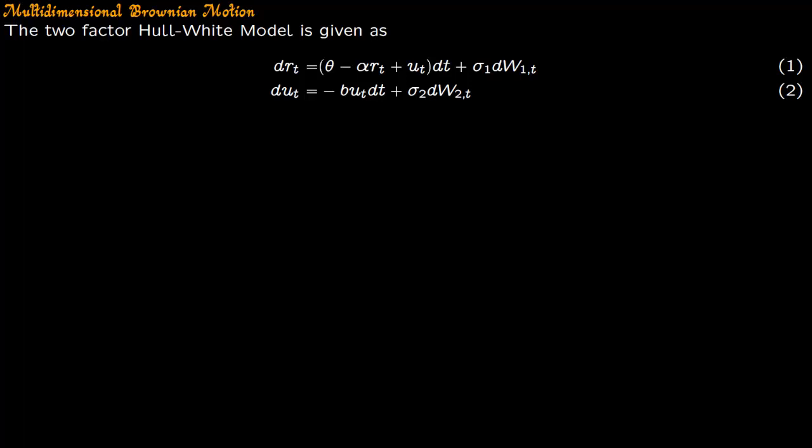Let us now give an example of a multi-dimensional Brownian motion. So the fundamental example is the two-factor Hull-White model.